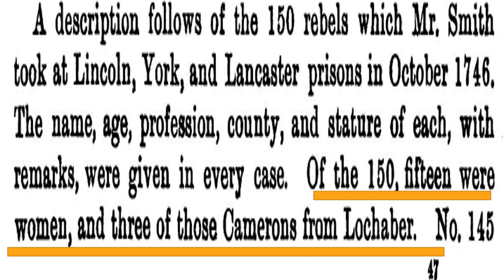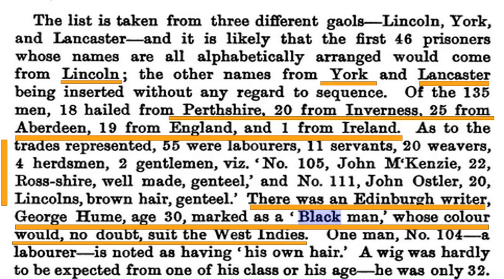We're going to be looking at the descriptions of these 150 rebels — with a notation that 15 were women. There's an interesting notation that supports the idea of separating people based upon phenotype: an individual known as George Hume was marked as a black man, and it was determined because of this that he would be best suited to the West Indies. Again, you see this dynamic of separating family members and subjecting people to different types of servitude based upon phenotype.